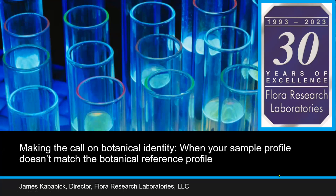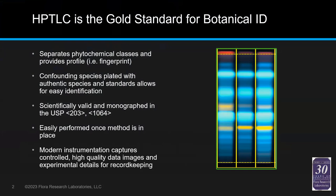What I wanted to talk about today is how we take these challenging samples. I want to start by saying that HPTLC is the gold standard for botanical ID. For a chemical method, it is an excellent technique that separates the phytochemical classes and provides a profile or fingerprint. You can plate confounding species — ones that might get mixed up or used as adulterants for identification. This is a monographed method in the United States Pharmacopeia, and it's easy to perform once methods are developed and in place.